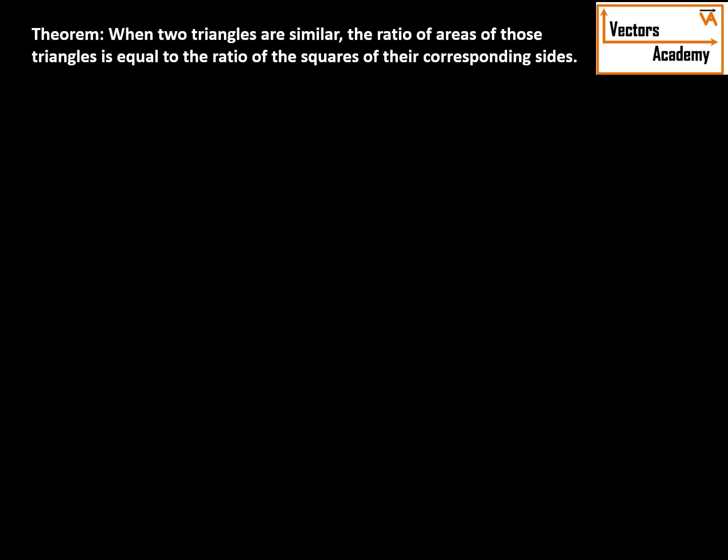We will now have a look at our next theorem. The theorem states when two triangles are similar, the ratio of their areas is equal to the ratio of the squares of their corresponding sides.